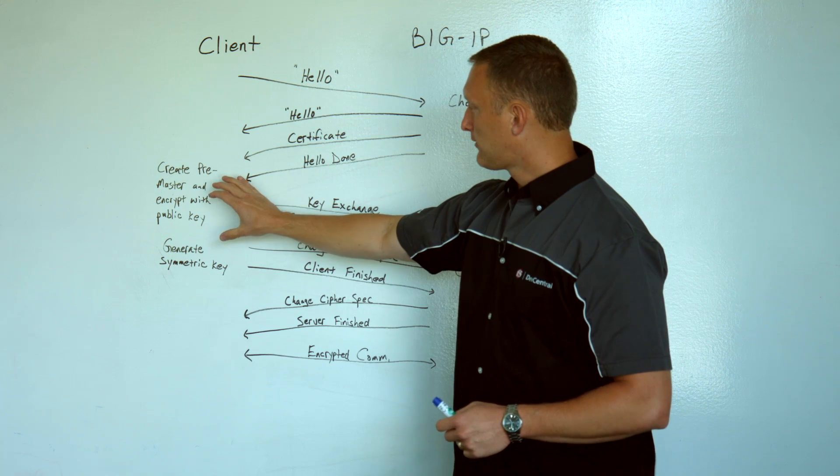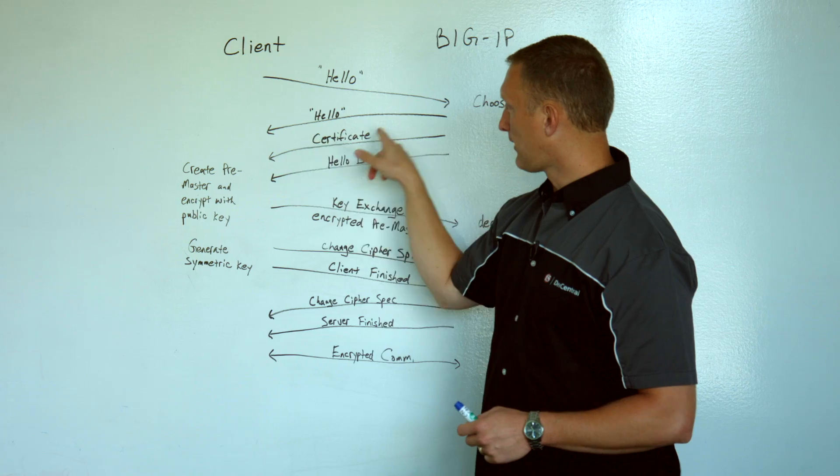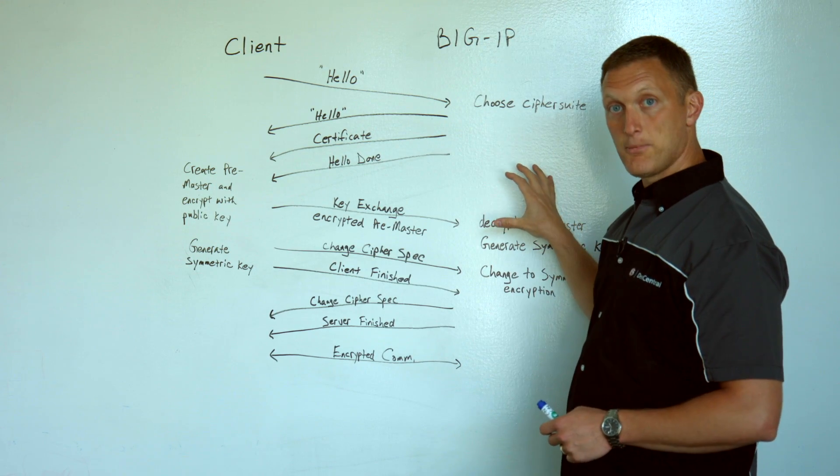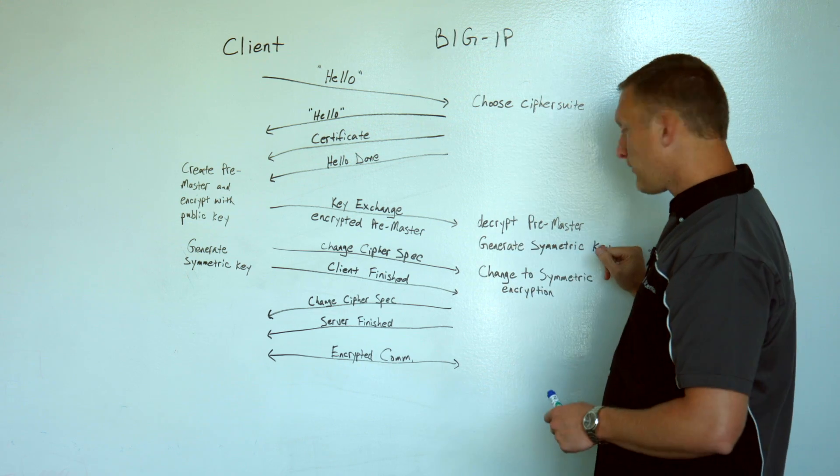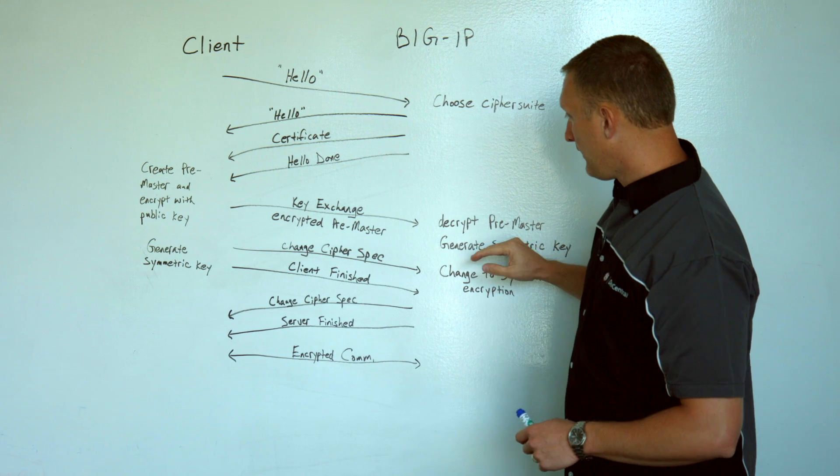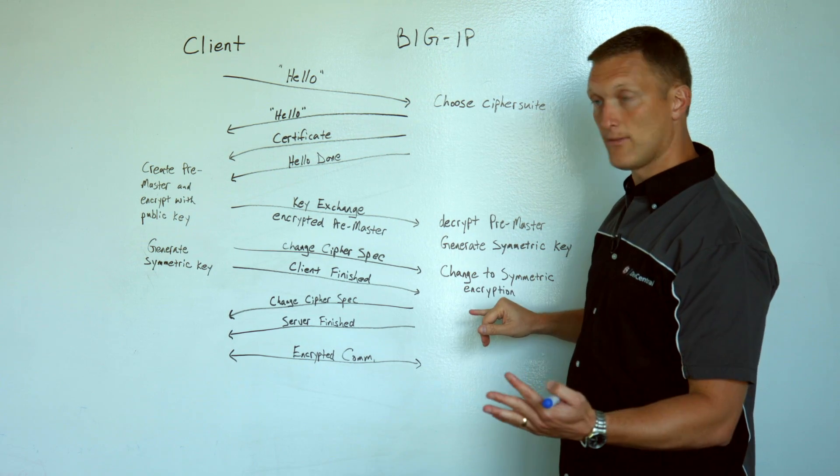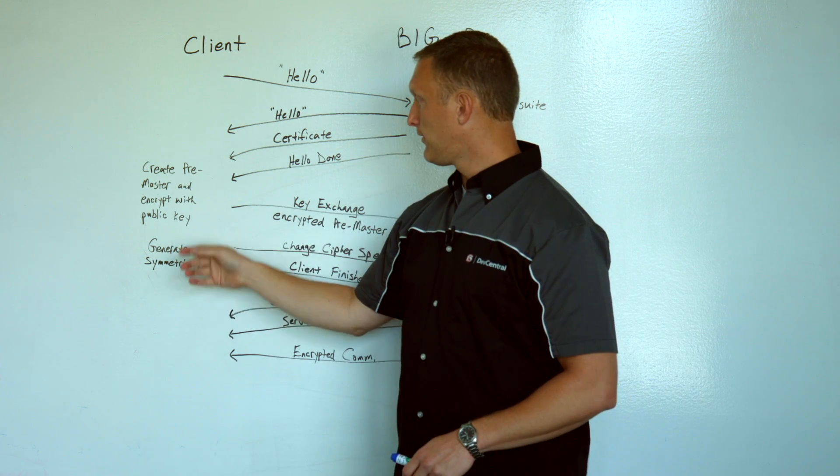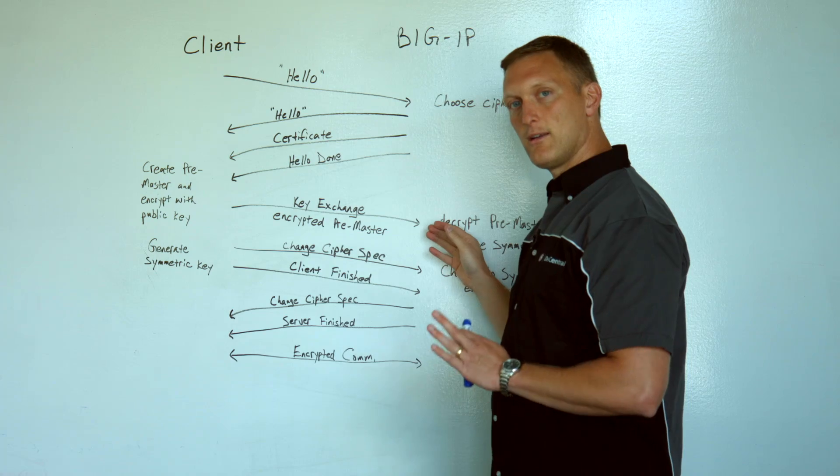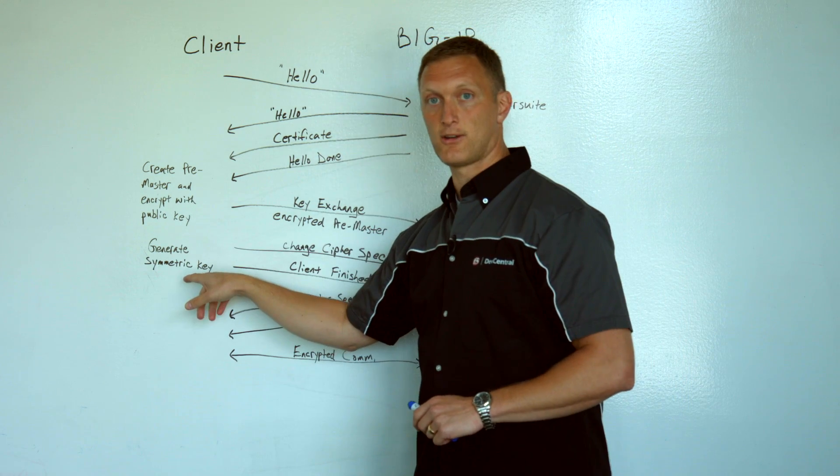So the pre-master secret has been encrypted with the public key of the server that was established from the certificate here. That's sent over to the server, to the BIG-IP. The BIG-IP is going to decrypt that and it's going to generate that symmetric key that we're all looking for. And then it's going to say, hey, let's change now to the symmetric encryption now that we have the symmetric key. The client is going to do a similar thing. It's going to generate the symmetric key as well.